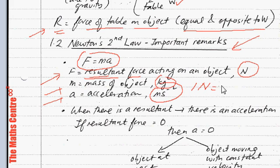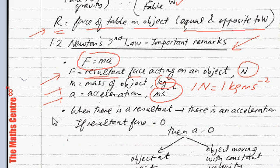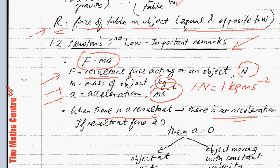So 1 Newton equals 1 kilogram meter per second squared. Next important remark: when there is a resultant force, there will be an acceleration. If the resultant force is zero, then your acceleration is zero.